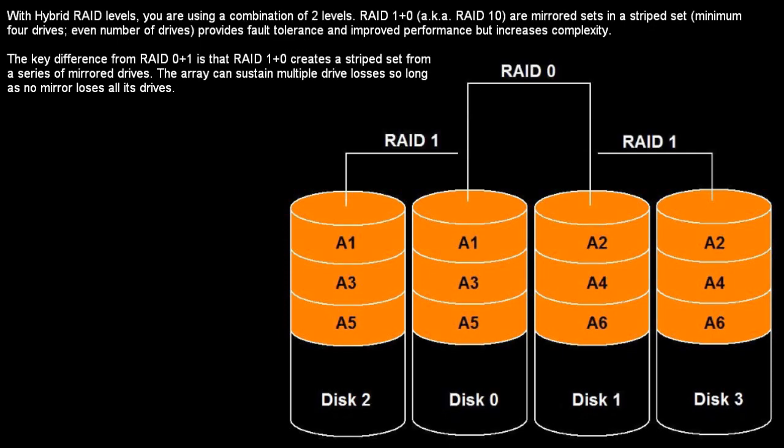Now we're going to talk about hybrid levels. With hybrid RAID levels, you are using a combination of two levels. RAID 1 plus 0, also known as RAID 10, consists of mirrored sets in a striped set, which requires a minimum of four drives — an even number of drives. It provides fault tolerance and improved performance, but increases complexity. The key difference from RAID 0 plus 1 is that RAID 10 creates a striped set from a series of mirrored drives. The array can sustain multiple drive losses, so long as no mirror loses all of its drives.